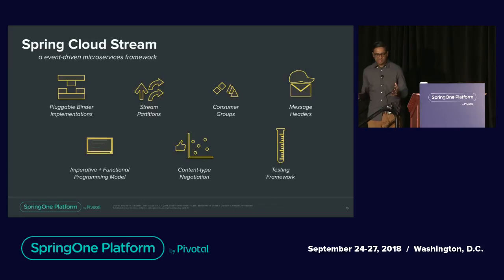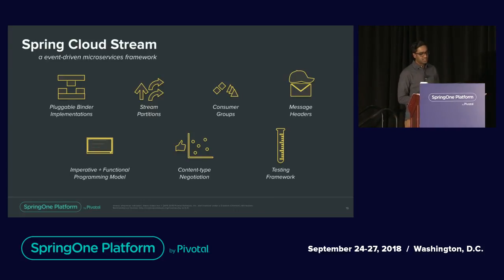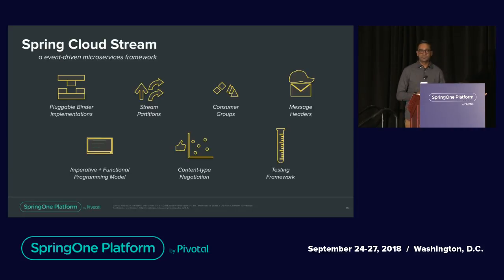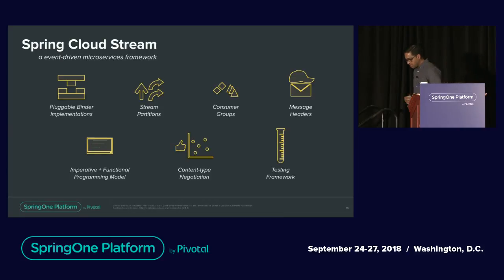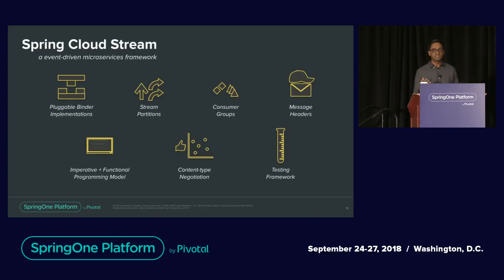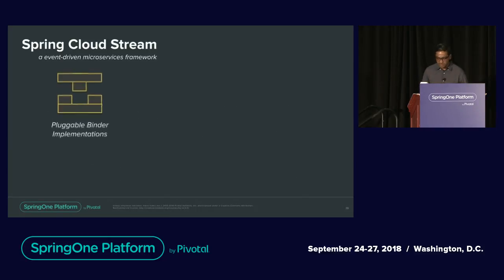Now we've seen the problems and challenges — what do we do from Spring's perspective? I want to start with Spring Cloud Stream. How many of you have heard about or are using Spring Cloud Stream? About 20-25%. I want to quickly introduce what this framework does for those who are unfamiliar. Spring Cloud Stream is an abstraction for a message channel — a channel is a primitive in the framework through which the business logic you write connects to the message broker.